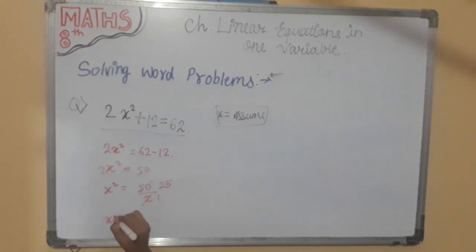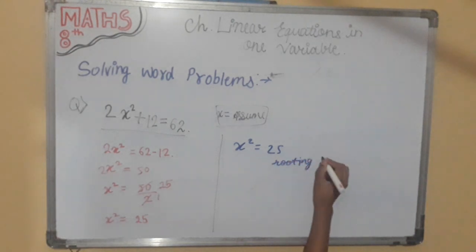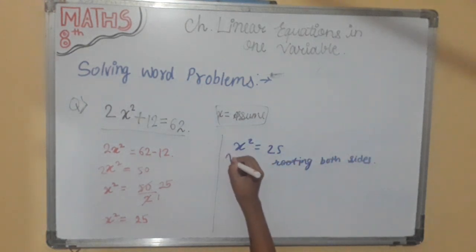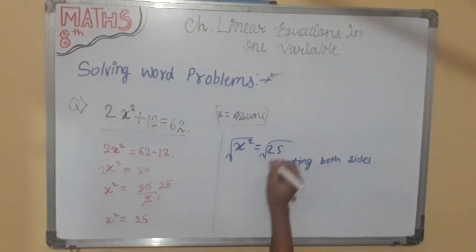So x square is equal to 25. Now we know that x square is the square of 5. Or else we can take the root. Rooting both sides like this.